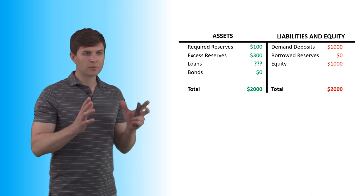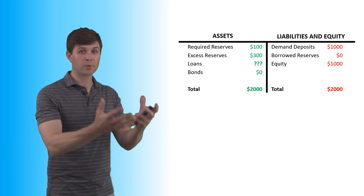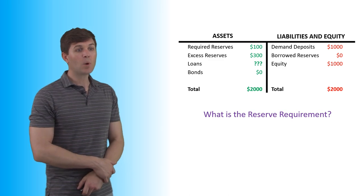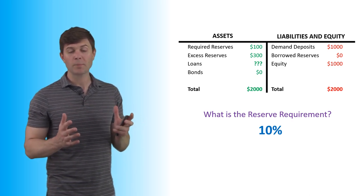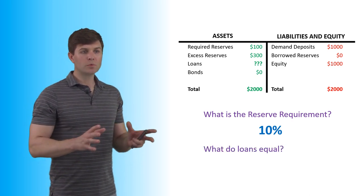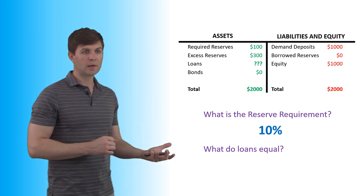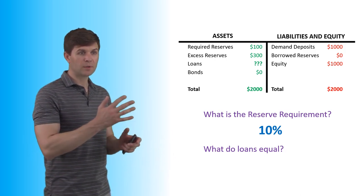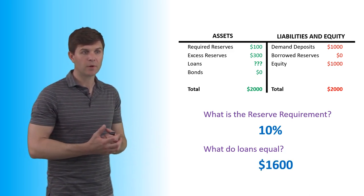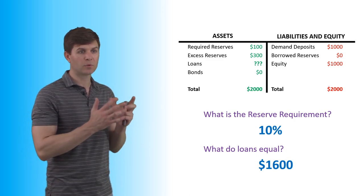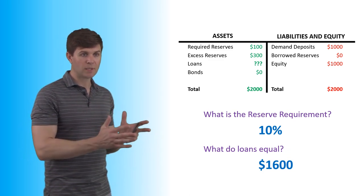In the next model we have $2,000 on each side. We do have equity in this one — what the shareholders bring to the table. What is the reserve requirement? We have $1,000 in demand deposits and $100 in required reserves, so the reserve requirement is 10%. What do loans equal? We know the two sides balance: $2,000 in liabilities means $2,000 in assets. We have $400 in reserves, so the other $1,600 must be loans. That's the only unknown, and it has to make the sides equal.